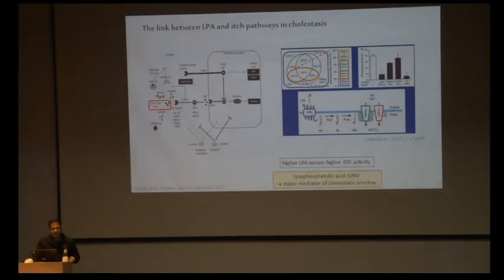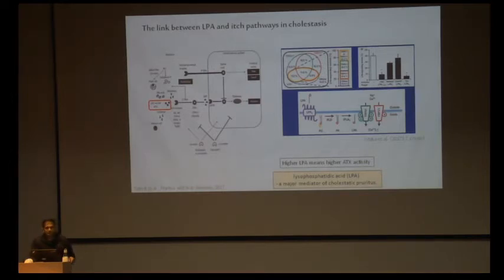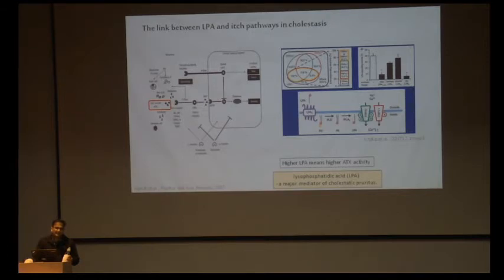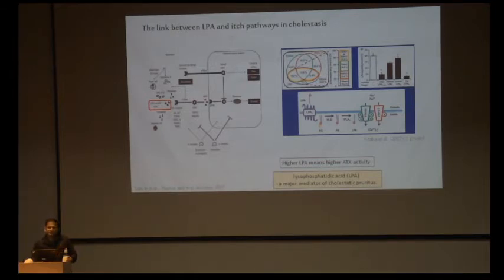Autotoxin in cholestatic conditions was first described in 2010 by Kremer et al., published in Gastroenterology. It was shown in ICP patients that the serum of ICP patients increases intracytoplasmic calcium levels and stimulates neurons. Most data on autotoxin in cholestatic conditions has emerged in the last five to seven years, and evidence supports that as itching intensity goes down with treatment, autotoxin levels also go down.